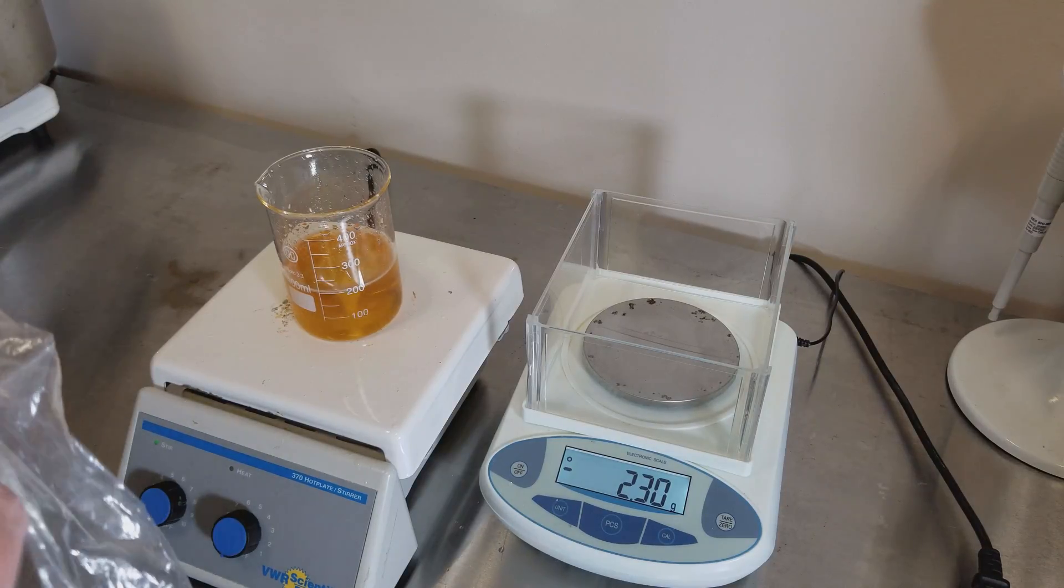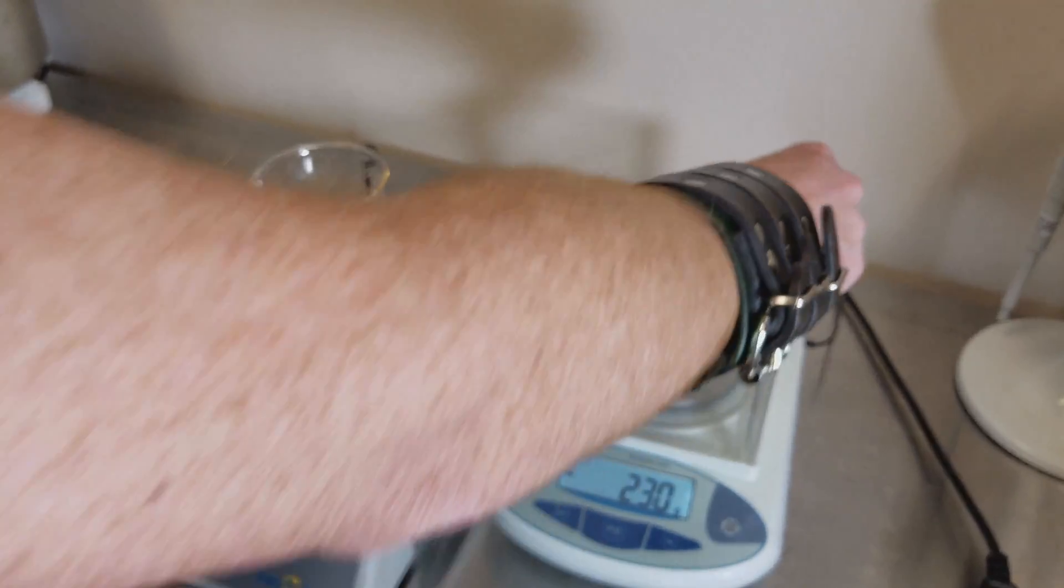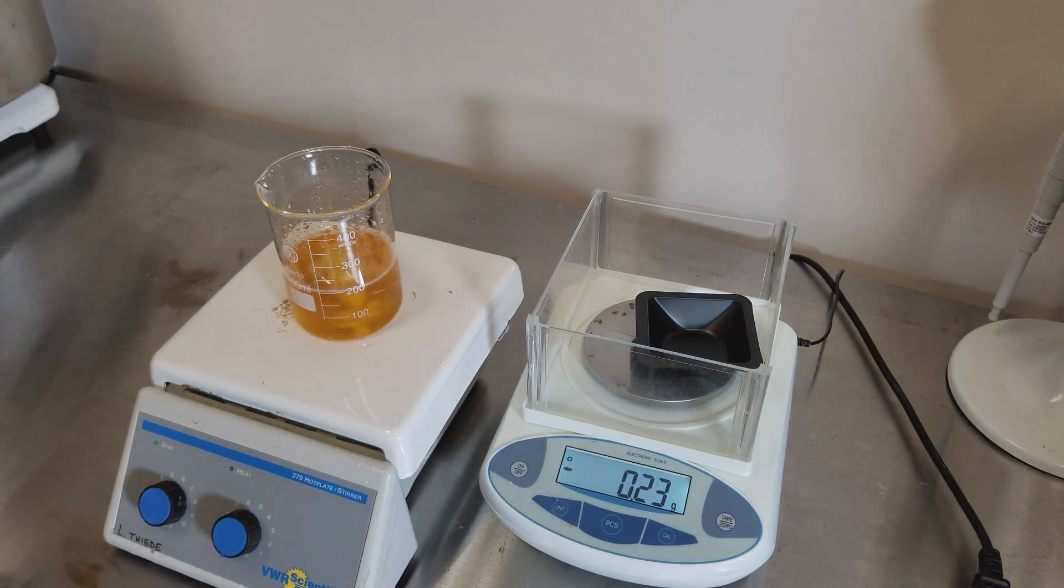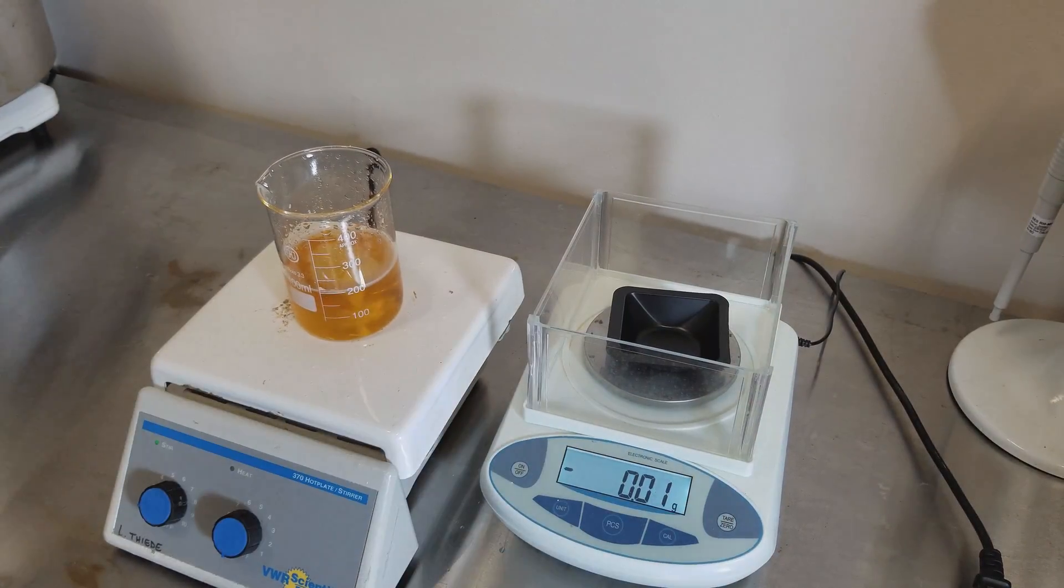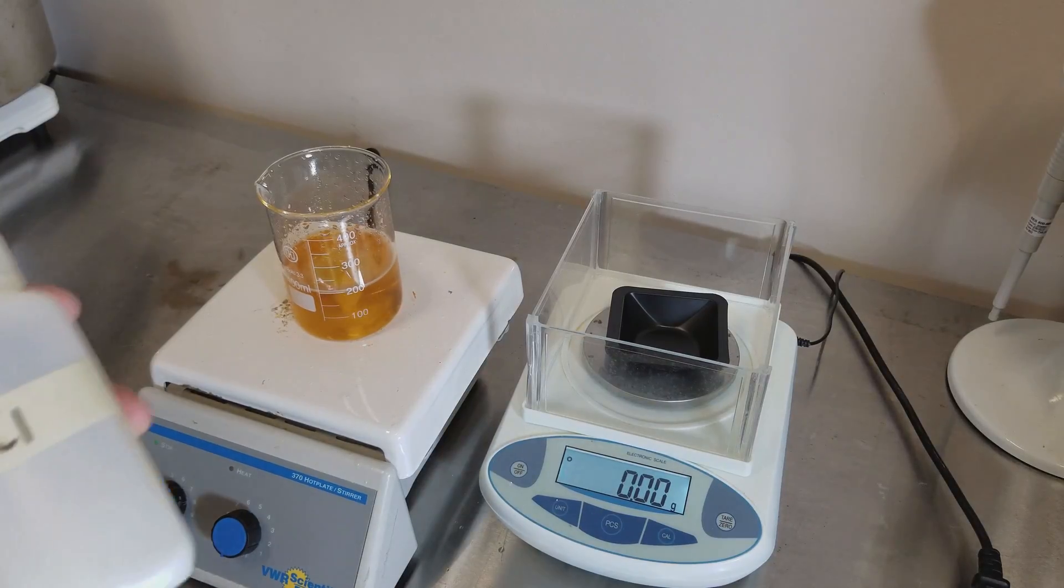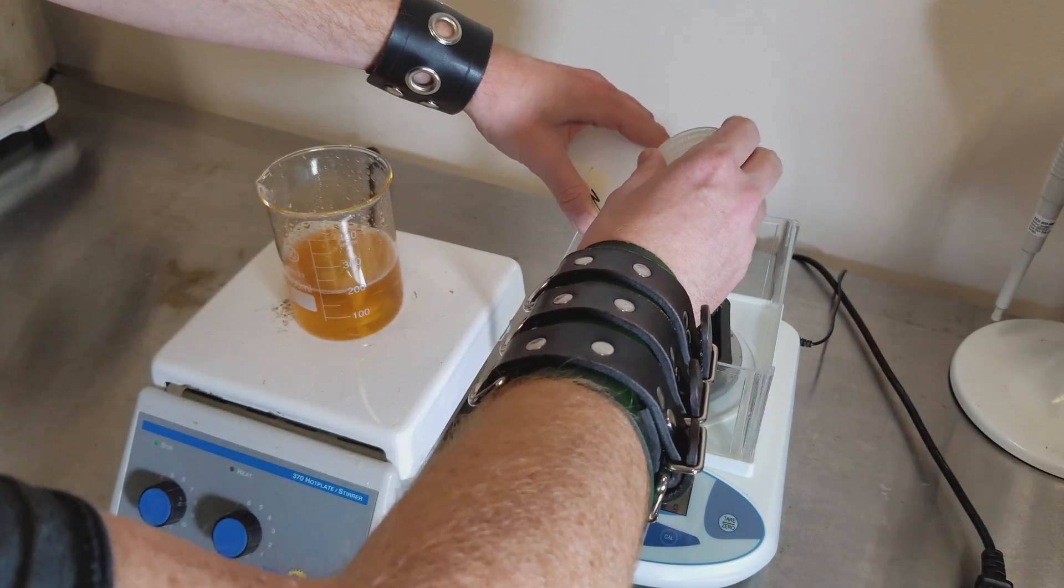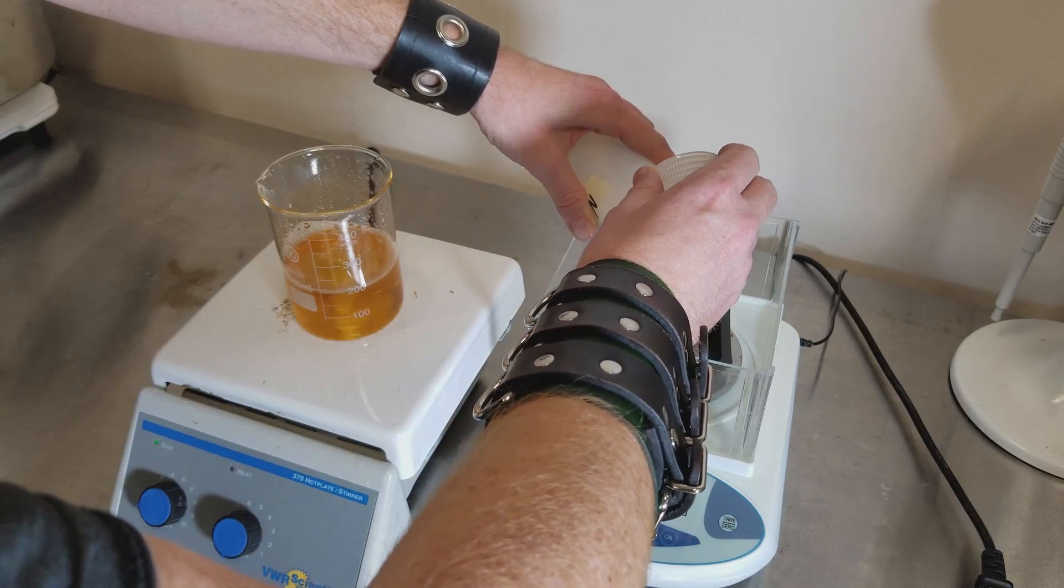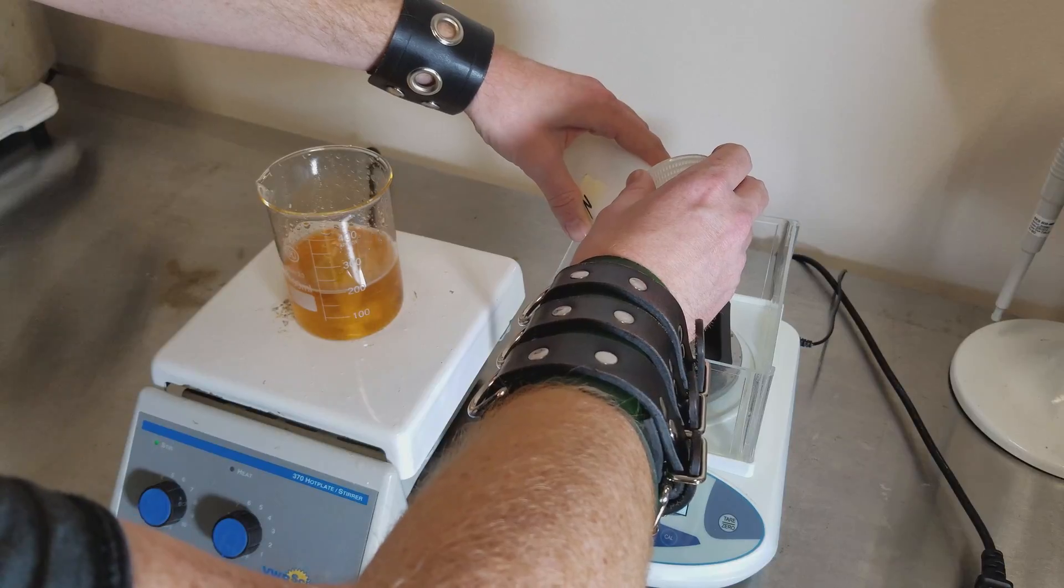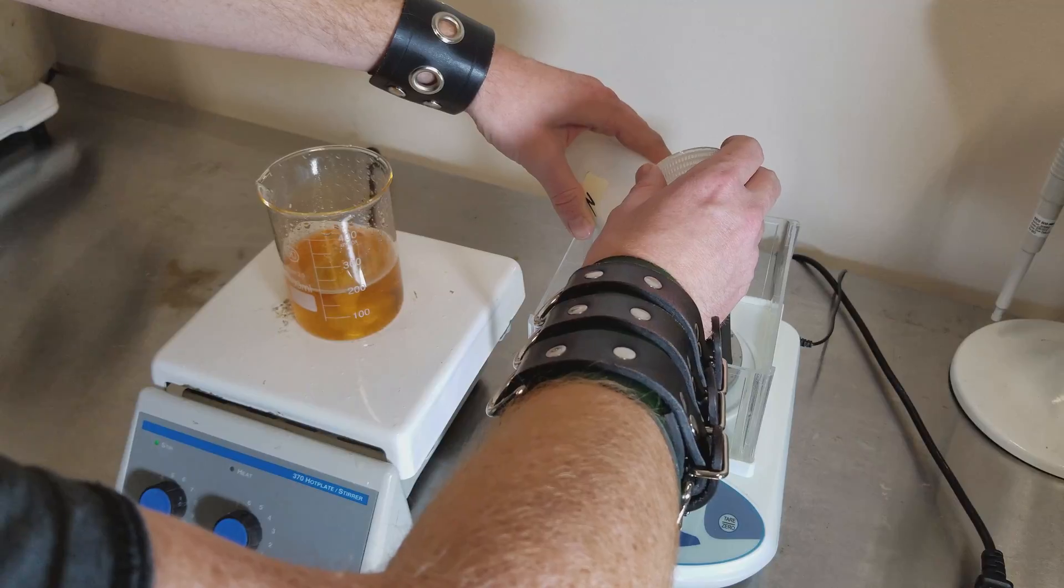Lastly, one more weigh boat. We need the sodium chloride. If we check our chart, it's another two and a half grams. So we'll take the salt and weigh out two and a half grams. Salt is pretty dense, so you can quickly approach your weight.